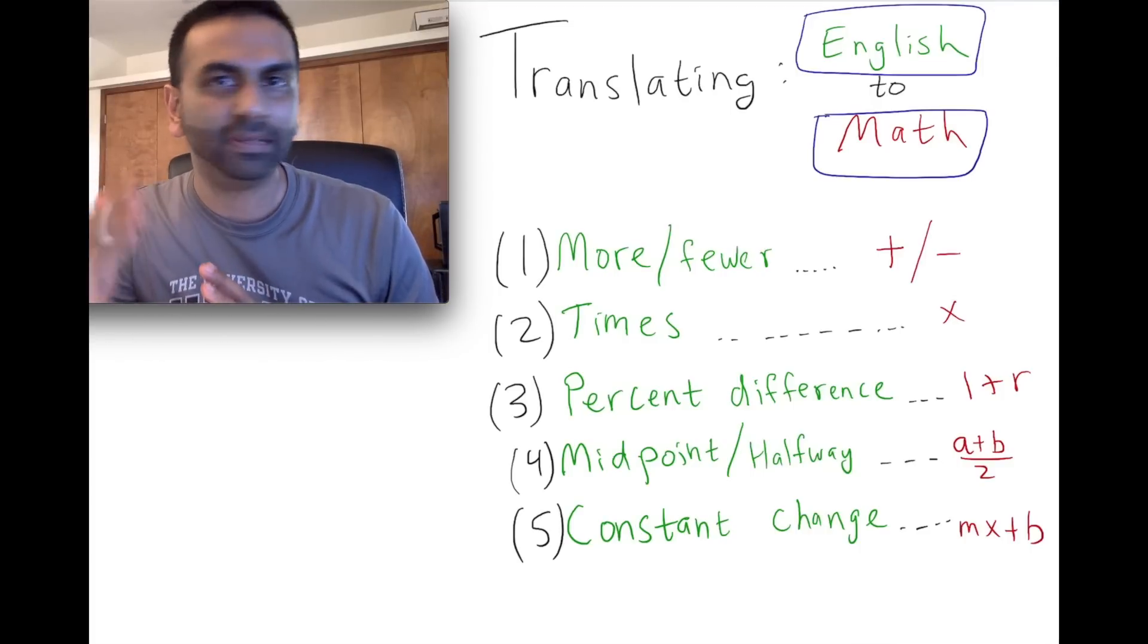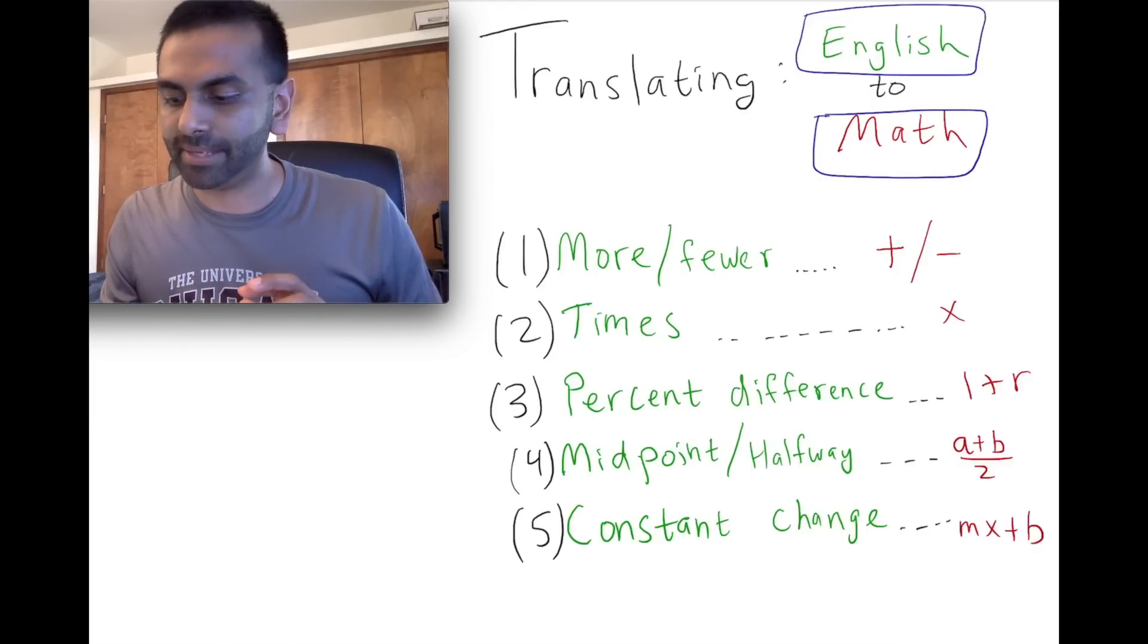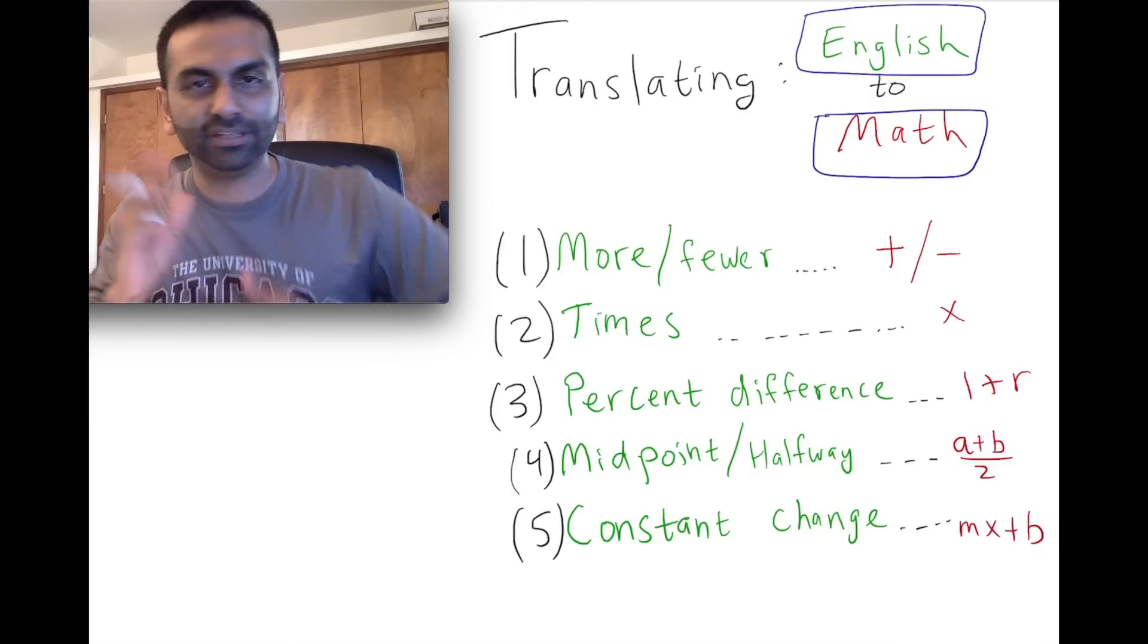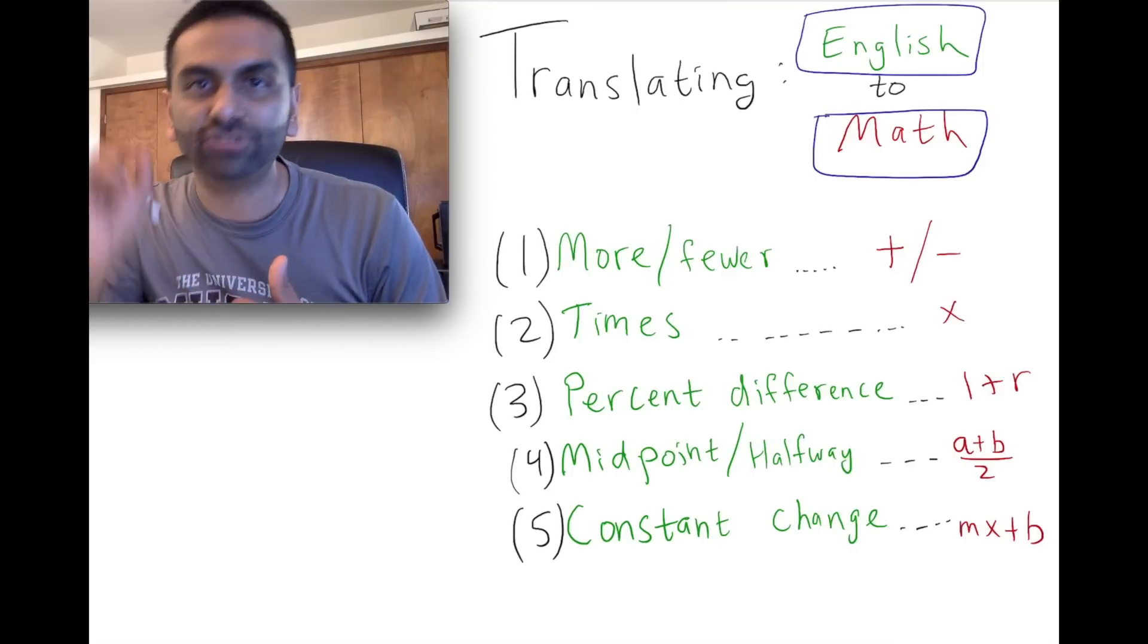is the amount that is changing by each period. And the starting value, whatever you start off with, is what we call b, the intercept. So these are two new words for some people—intercept and slope. Intercept is the starting value, slope is the amount that you change each period.